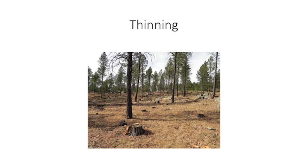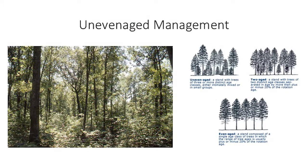There are trade-offs to both methods, but we're going to talk today about the method of reducing our risk to disturbance. We've talked earlier in the day about thinning, and thinning is certainly something that you can do to proactively reduce your risk to certain types of disturbances, but not all. Uneven age management is something that's fundamentally different - it's an entirely different way of managing trees, a strategy, if you will.